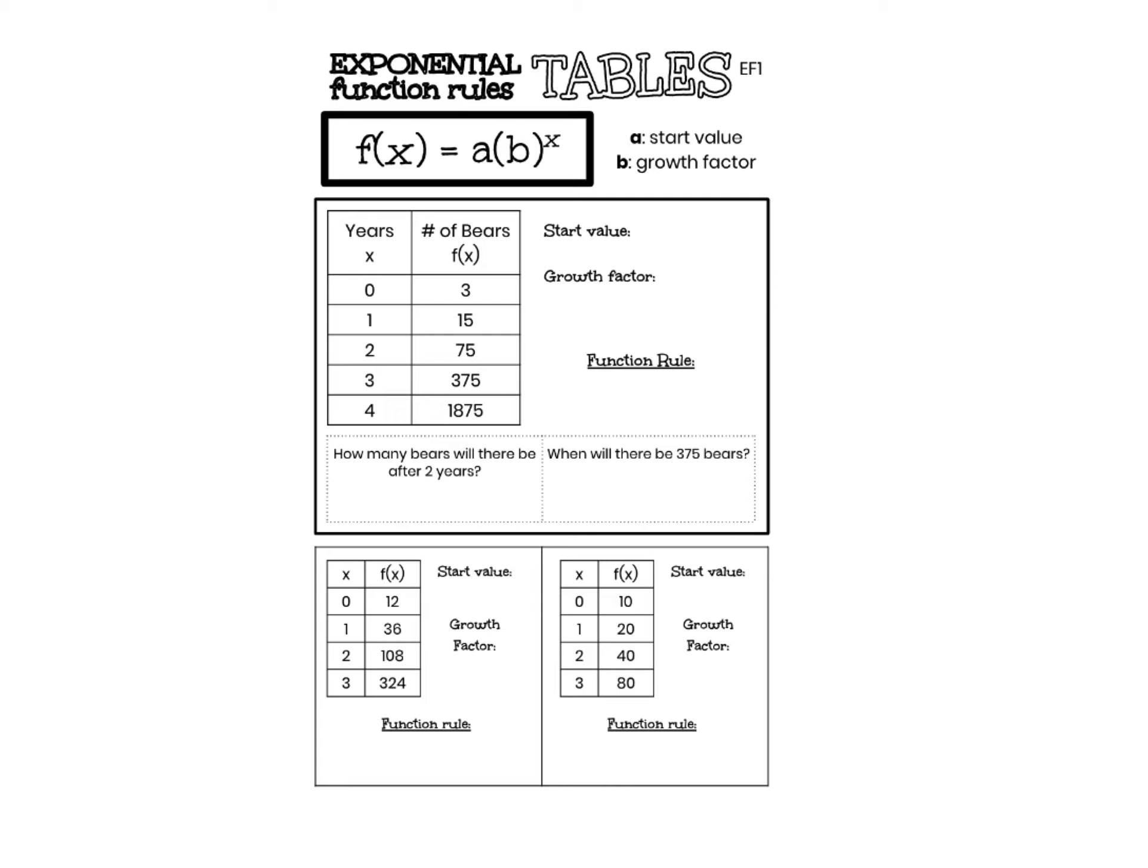Exponential function rules from tables. Whenever I'm writing an exponential function rule it will be of the form f(x) equals a times b to the x, where a is my start value and b is my growth factor.